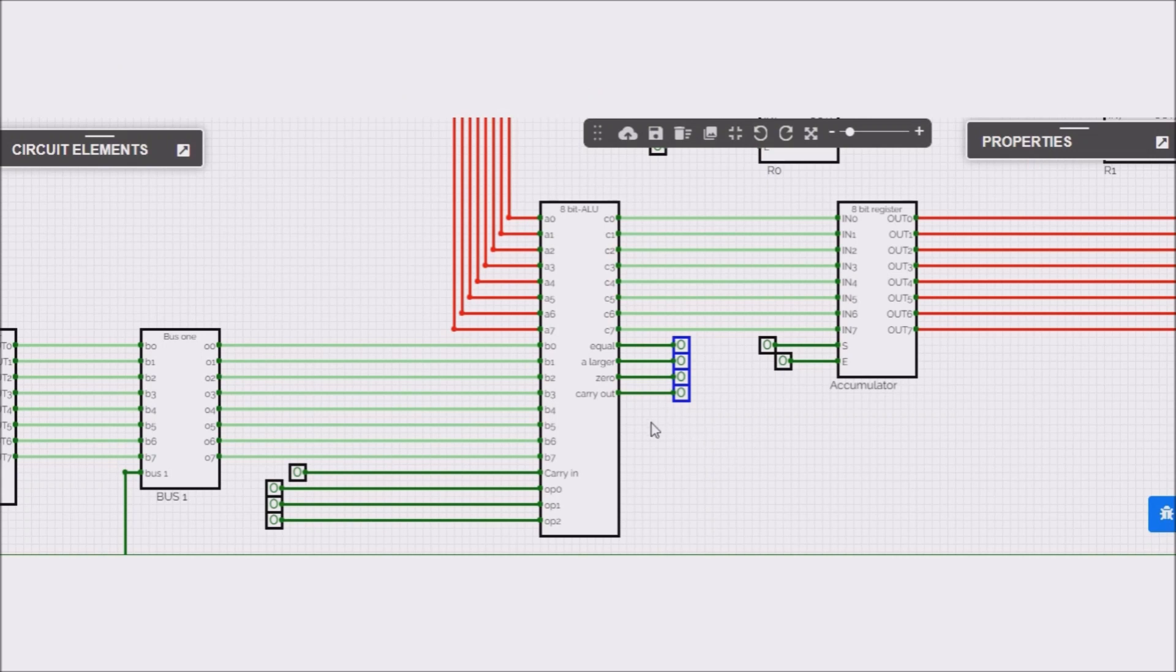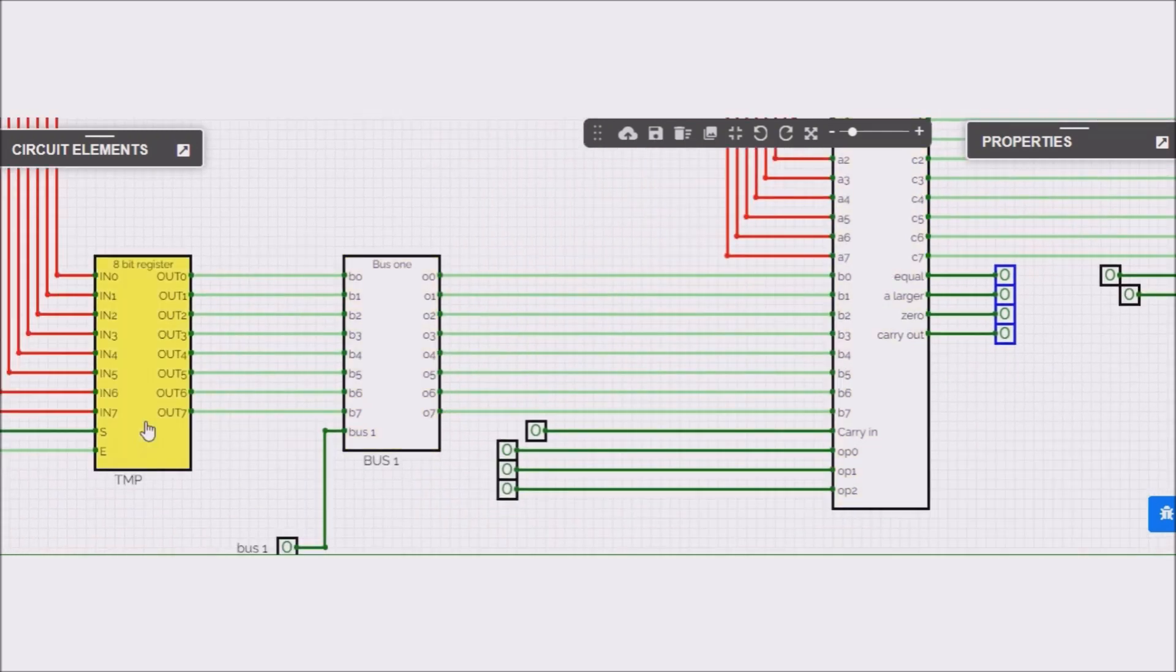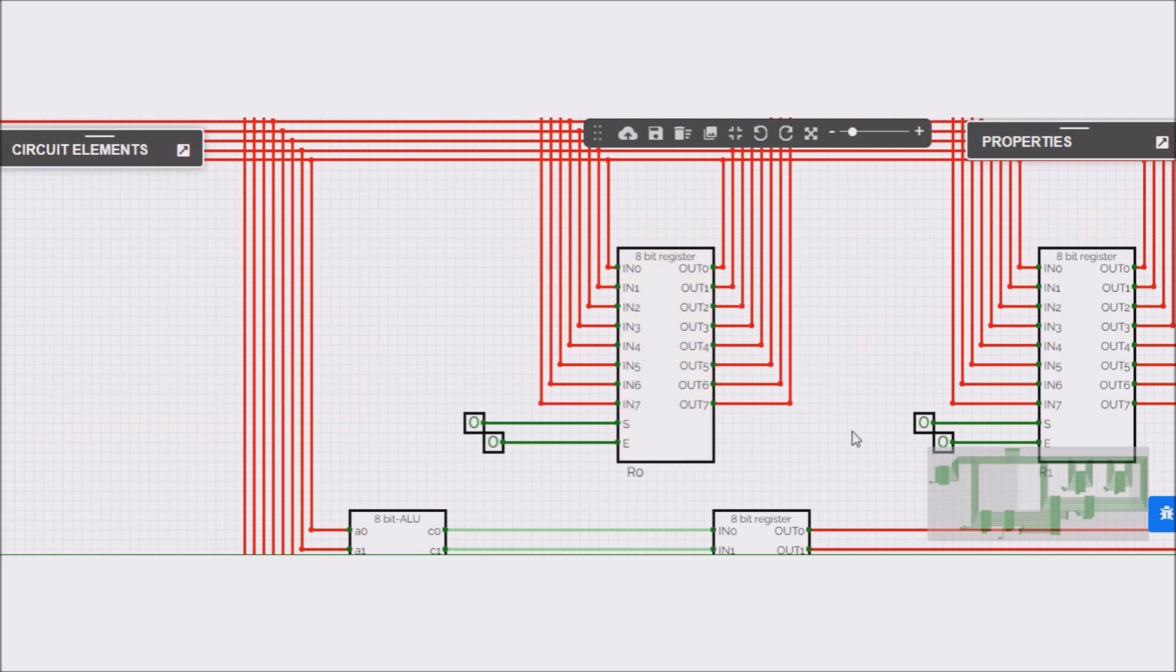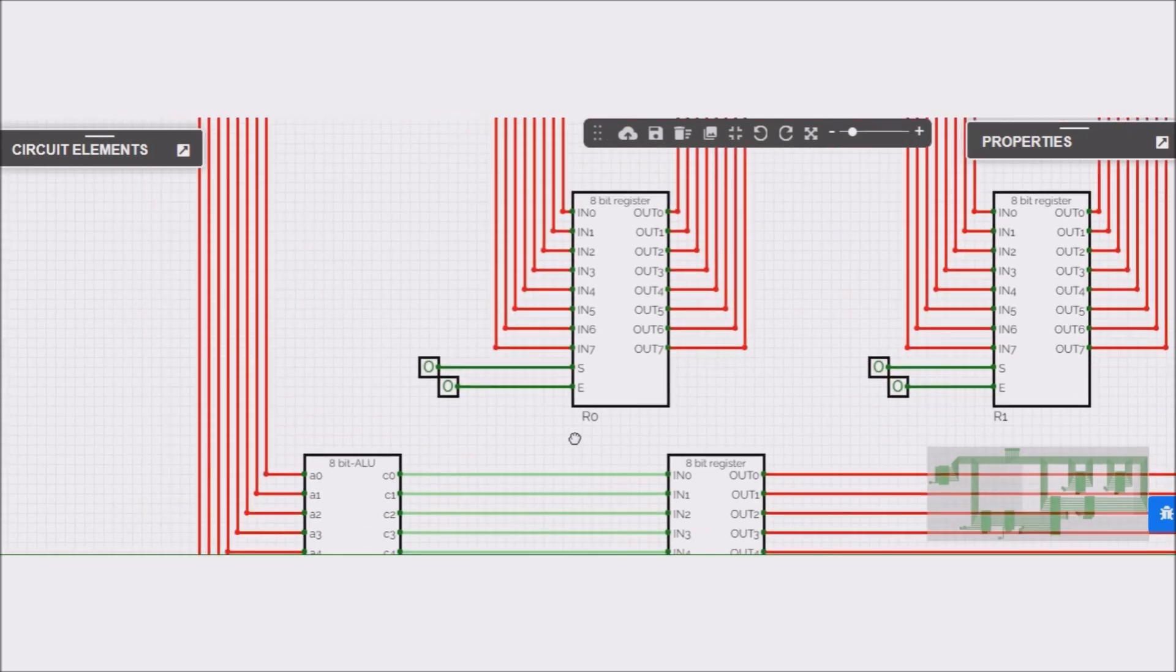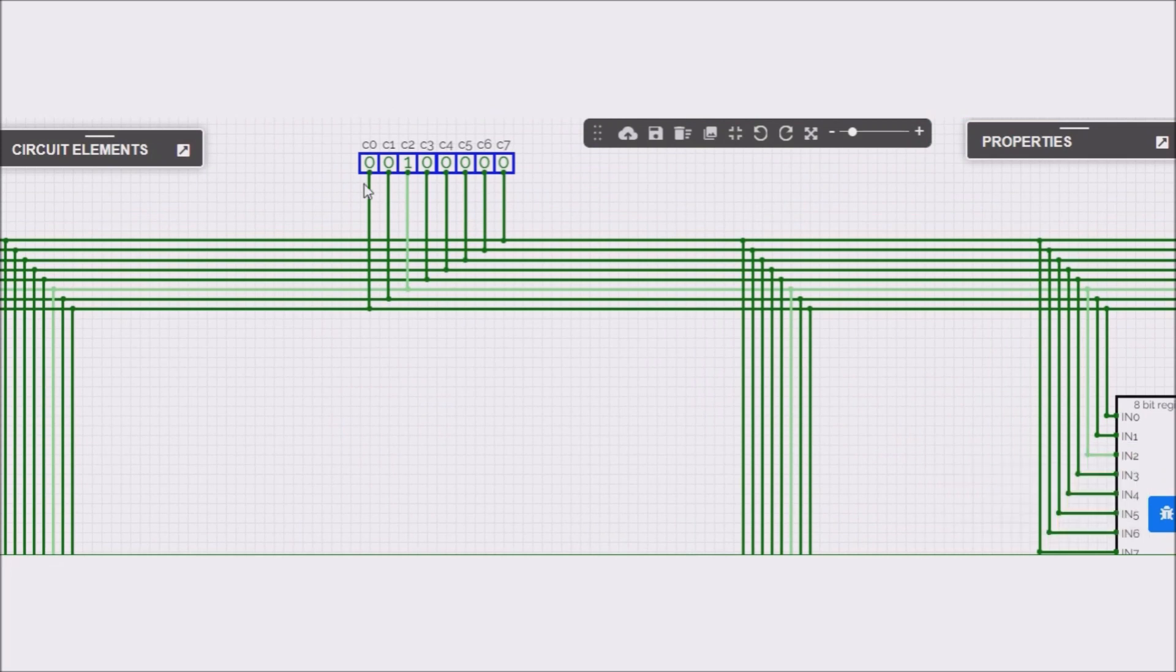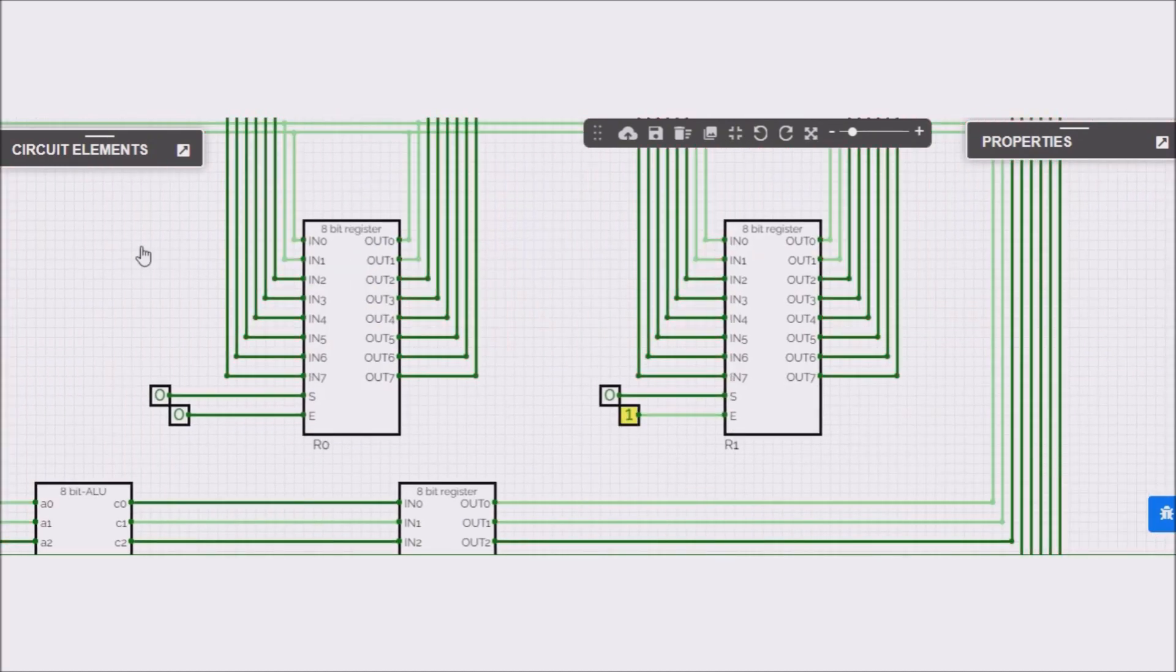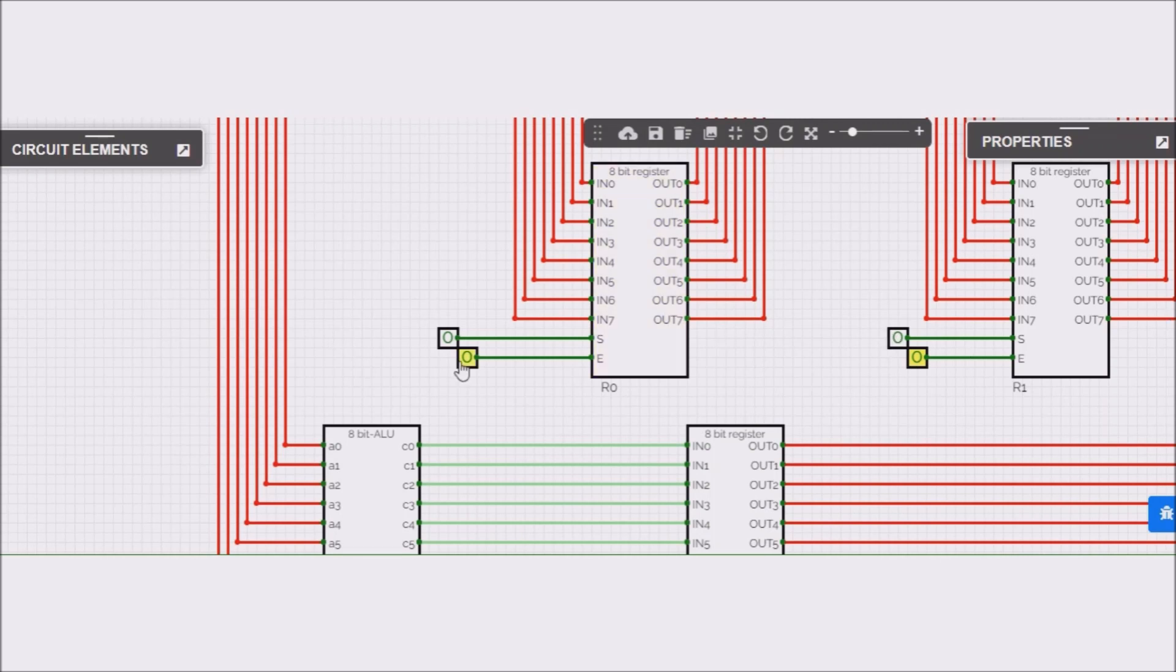So, here we are with our simulation. We can see our 8-bit ALU and here there is the bus1 and the TMP register. As output I have the accumulator register. And here we have R0 and R1. I already put inside these two registers the right number, but we can check it. R0 should have the number 4. We can see here, reading on the bus, there is the number 4, because the least significant bit is C0. So, this is the number 4 inside the R0 register. Inside the R1 register we have the number 3.